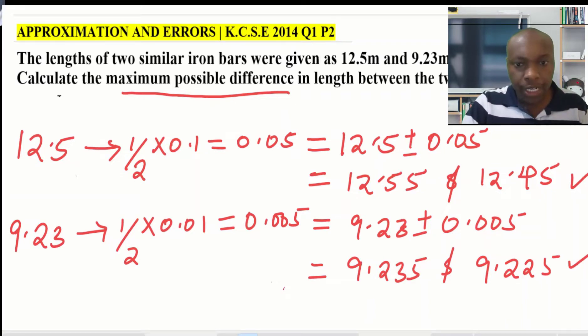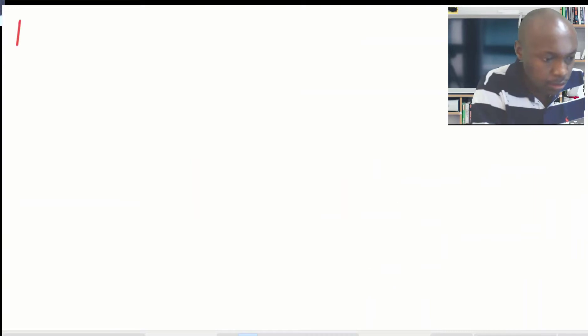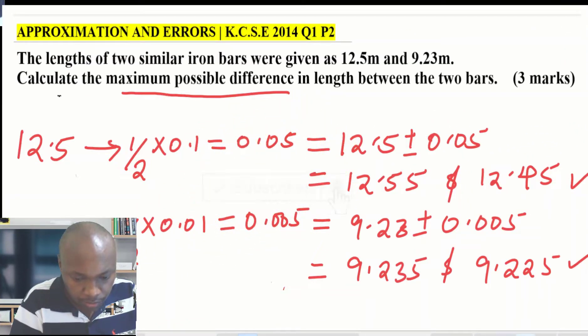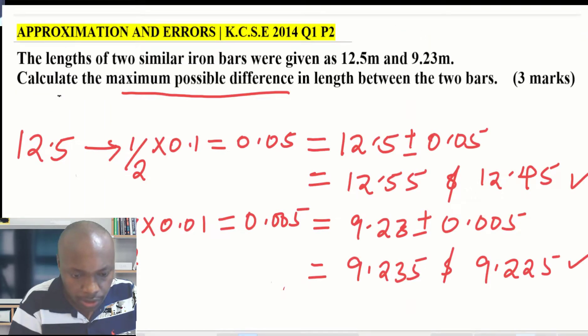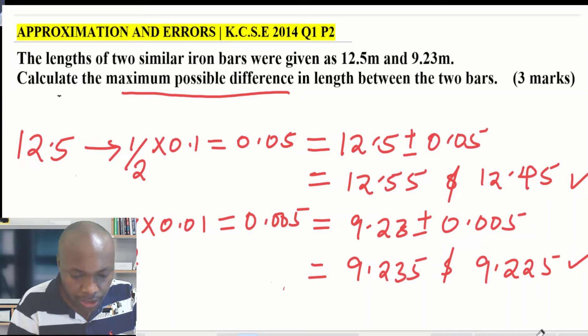Now let us get the maximum possible difference. The maximum difference will be given by the maximum of 12.5 subtract the minimum of the other measurement, 9.23. This is what is going to give the maximum possible difference.